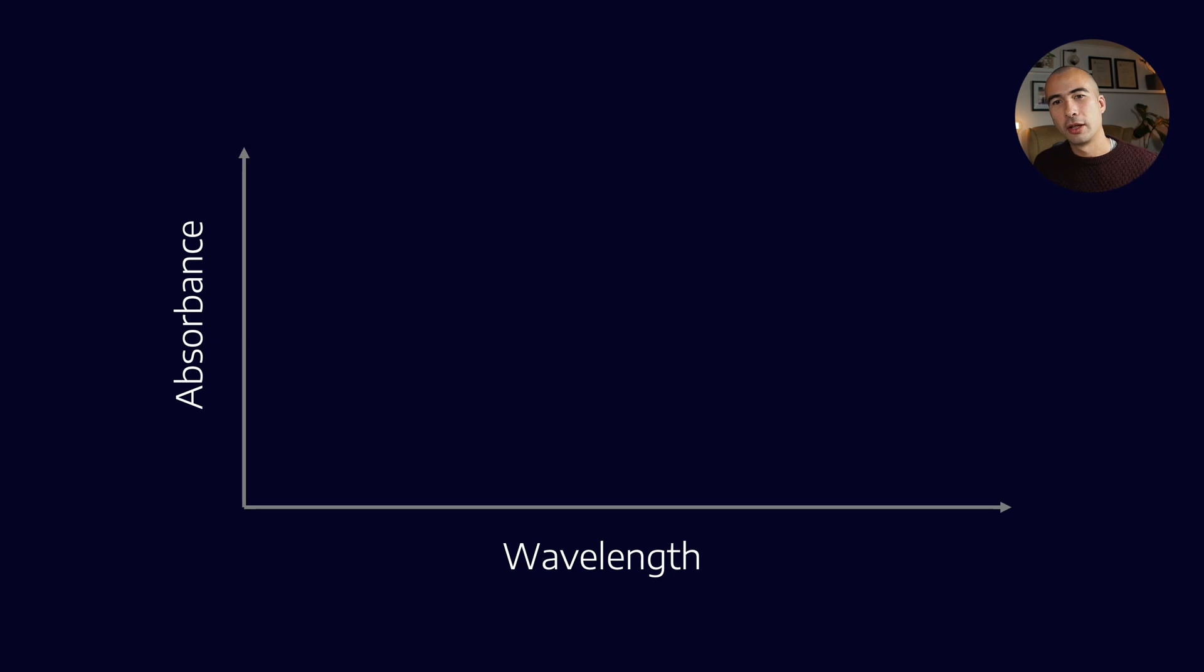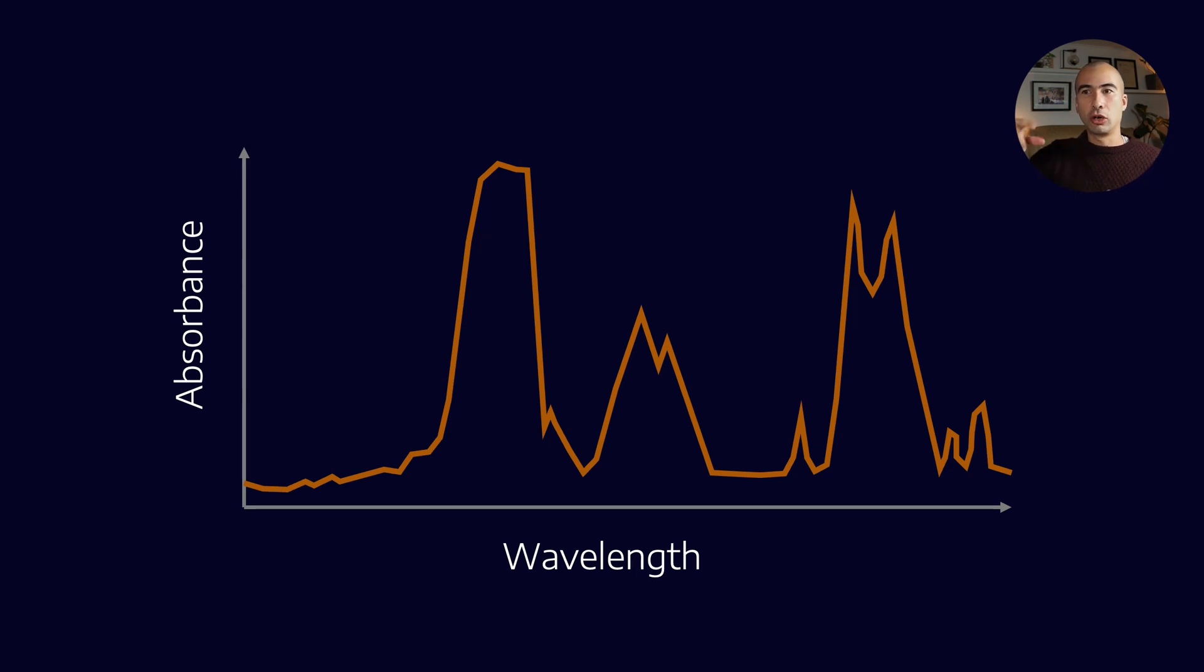So what we get out of this is a spectrum that shows wavelength versus what we would call absorbance. So we know that we have fired out infrared particles, and we do that over a number of different wavelengths, and we measure how many of them don't make it to the detector.